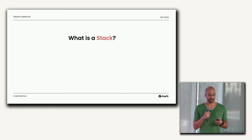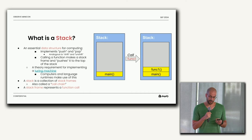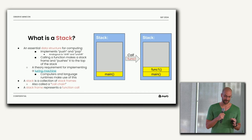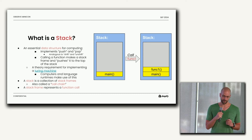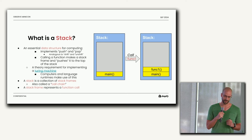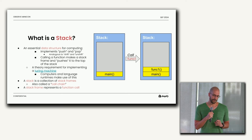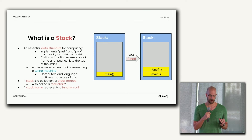I just mentioned a stack. What the heck is that? I hope the computer scientists in the room know what a stack is, but let's review it anyway. Stacks are a very important data structure in computer science. They let us build these really cool things called Turing Machines, but I'm not going to get into that theory. Basically, you can think of it as a list that's got a push and a pop operation — or it's analogous to a stack of cards.